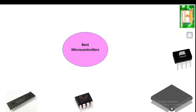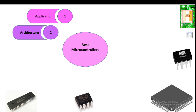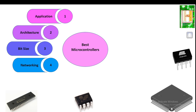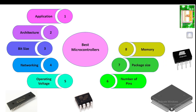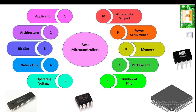There are 10 different steps which should be followed for the selection of a microcontroller. The first is knowing the application; second, the best suited architecture; third, the bit size; fourth, the type of networking; fifth, the operating voltage; sixth, the number of I/O pins; seventh, the size and package; eighth, the memory size; ninth, the total power consumption; and tenth, the support available from various websites.